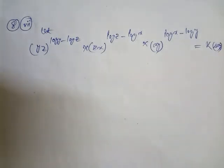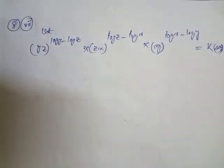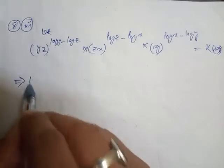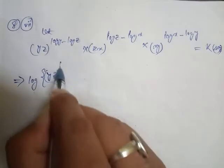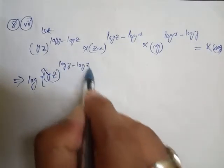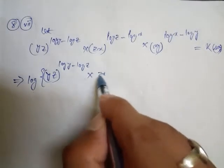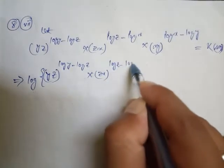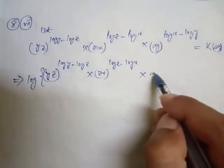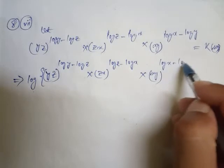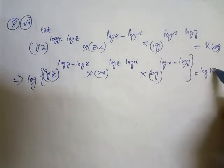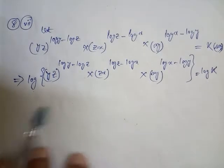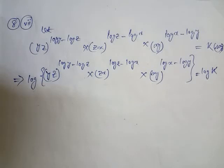Now, if I take logarithm on both sides, then log will be here, and in the bracket: y·z with exponent (log y minus log z), into z·x with exponent (log z minus log x), into x·y with exponent (log x minus log y), and this equals log k.